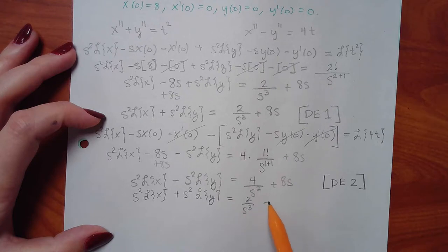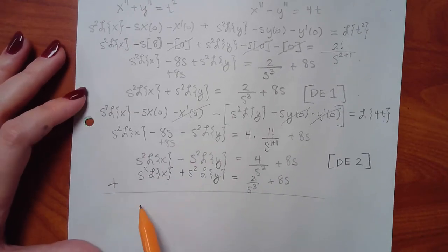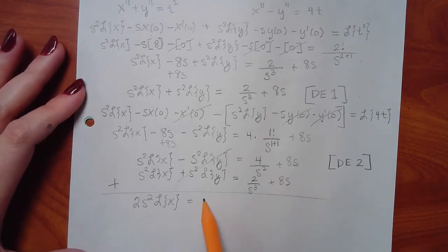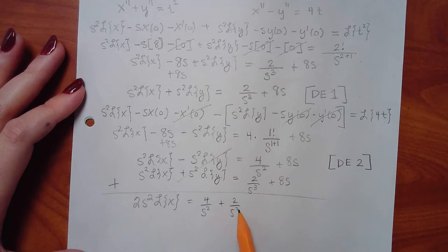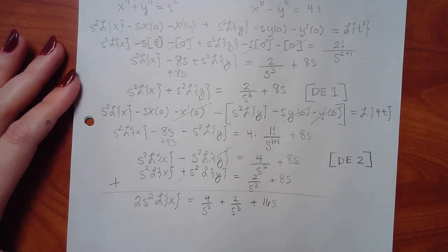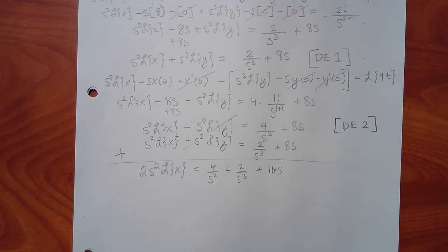Adding the two equations: the L{y} terms cancel, giving 2s squared·L{x} on the left. On the right I get 4 over s squared plus 2 over s cubed plus 16s. Now I need L{x} isolated before taking the inverse Laplace.